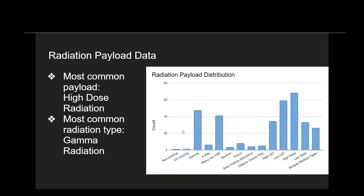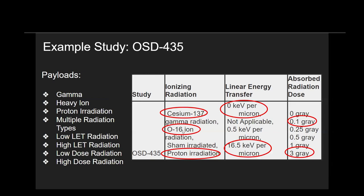Many studies have multiple radiation payloads as well. In order to understand why we chose these categories, I'm going to walk us through an example study that was assigned some of these payloads. When we curate metadata, we are tasked with extracting relevant information from these studies. Looking at the ionizing radiation column, we see cesium-137, which is used in gamma radiation; oxygen-16, which is a heavy ion; and proton radiation — so we pull out these three payloads. Since there are multiple different types of radiation, we add an additional payload called multiple radiation types. We also see in the linear energy transfer column that we have both low and high LET.